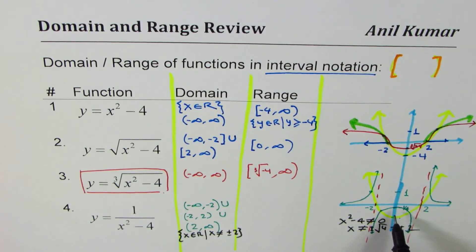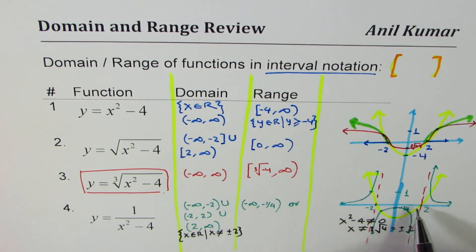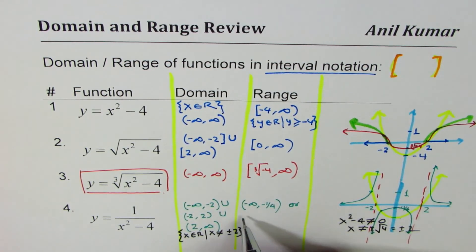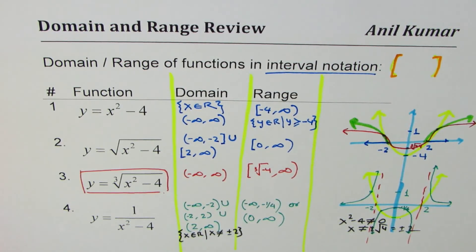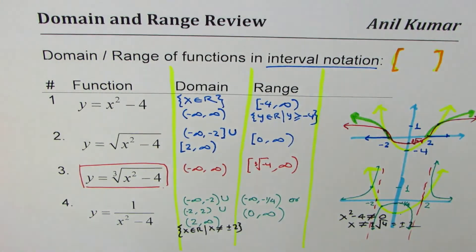From the graph, the range of 1/(x² - 4) includes all values greater than 0 and all values less than or equal to -1/4. So the range is (-∞, -1/4] ∪ (0, +∞). I hope you understand how to find domain and range for quadratic, square root, cube root, and reciprocal functions. Let's move on to more videos on this topic. I'm Anil Kumar — thanks for watching, share and subscribe, and feel free to post questions!